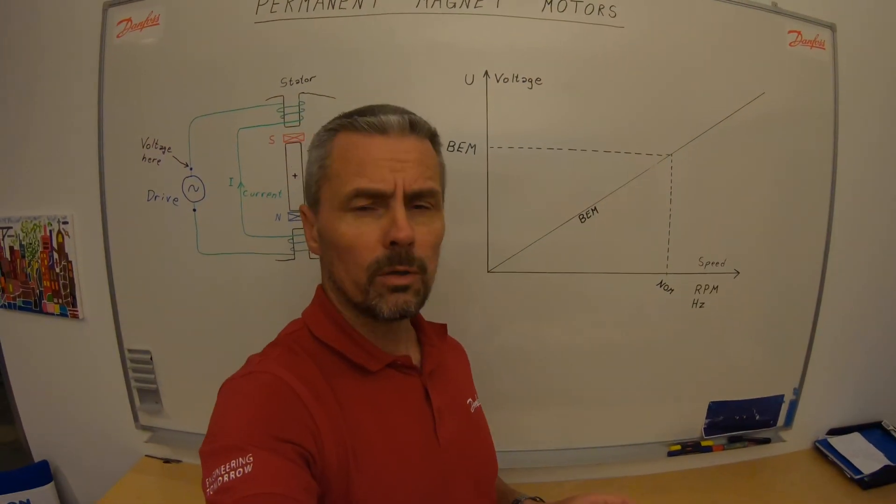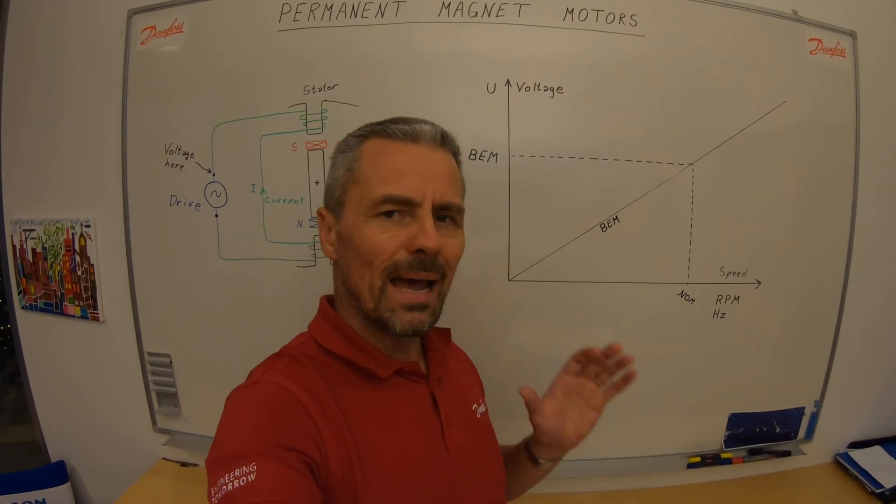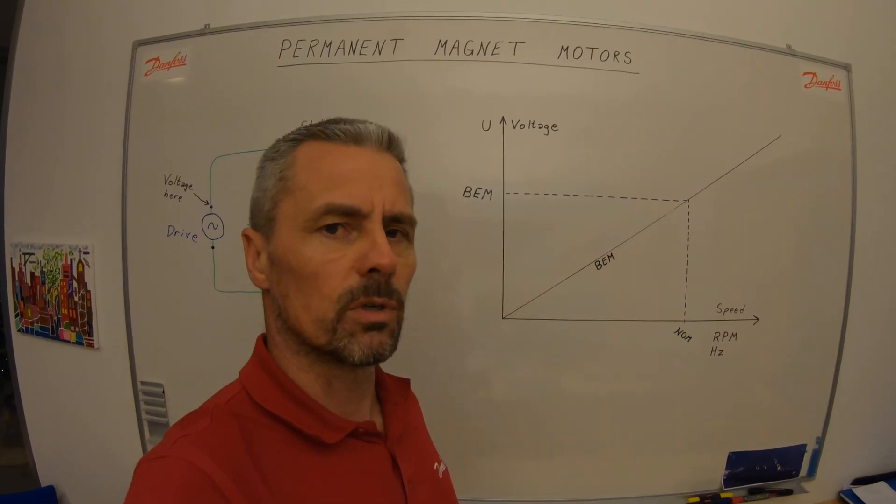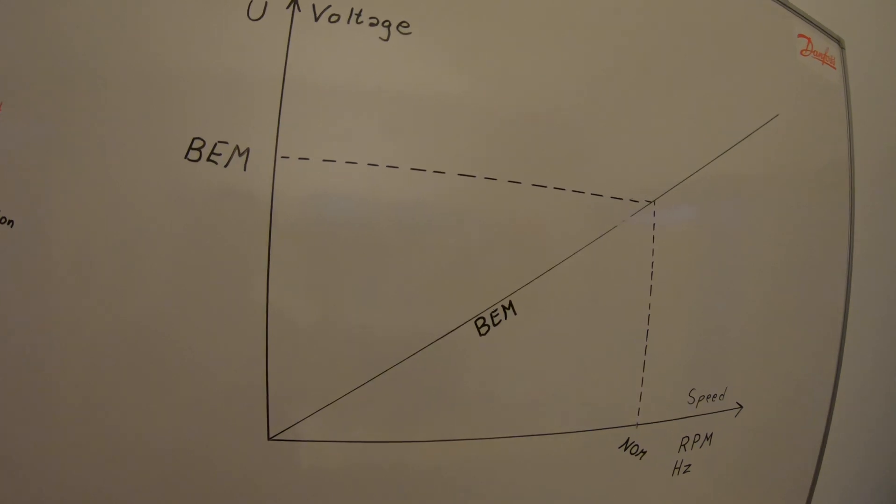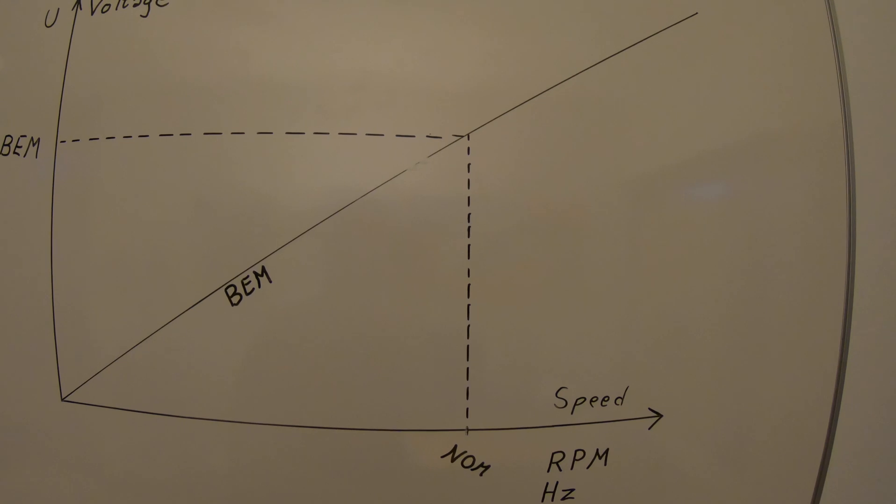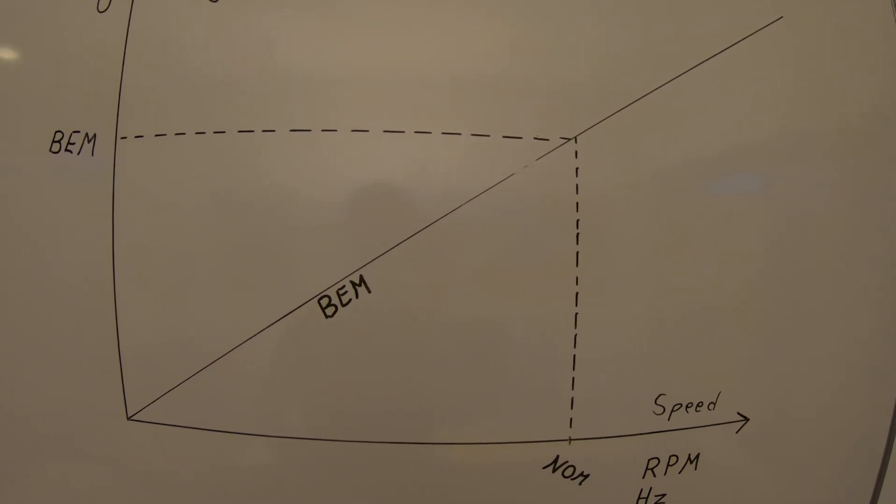We are now going to look into the motor back EMF voltage. All permanent magnet motors they are able to produce a voltage which is more or less linear with the speed you pull the rotor.